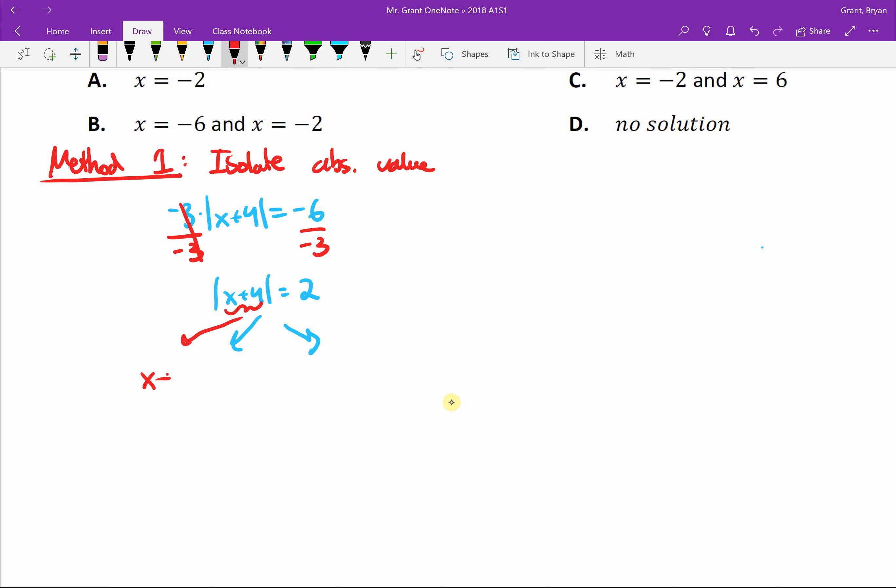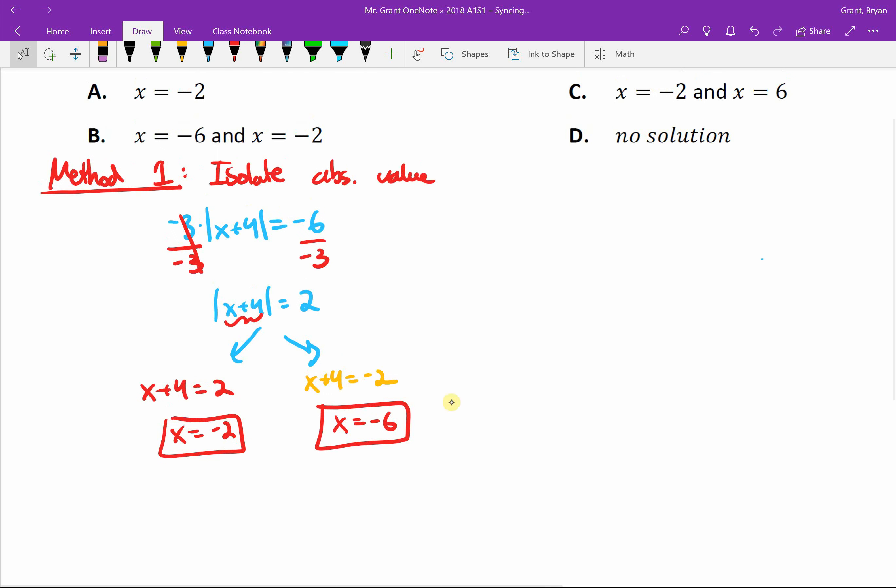So if I just look at this inside, we want the inside to be equal to positive two. Of course, at the same time, if the inside became negative two and then we did the absolute value, we would still get positive two. So our second equation is that x plus four could also be negative two and our left side would still be equal to the right. We subtract four from both sides and end up with x equals negative two. We subtract four from both sides and get x equal to negative six. Two answers here: negative two, negative six. It's going to be B.